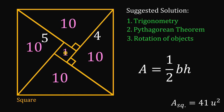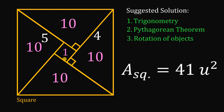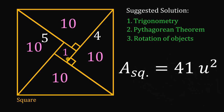Therefore, the area of this square must be equal to 10 plus 10 plus 10 plus 10 plus 1, or simply equal to 41 square units. And that is our answer to this question. And as always, we are done.